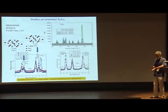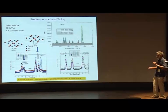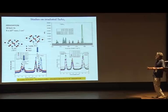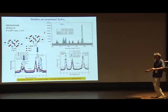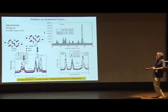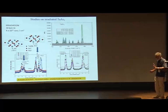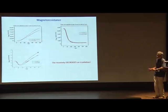Now, briefly on irradiation experiments: we irradiated tantalum diarsenide with 30 kV argon ions to introduce disorder. Evidence for disorder comes from Raman spectroscopy — comparing pre- and post-irradiation spectra shows the emergence of IR-active modes at 135 cm⁻¹ and 179 cm⁻¹, identified as arsenic-related IR modes. This clearly confirms that irradiation-induced disorder has been introduced.